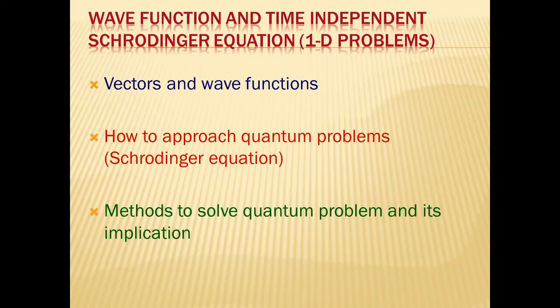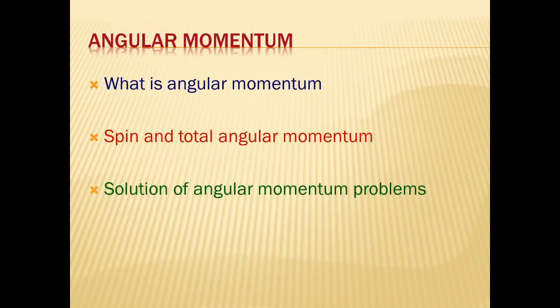The next unit is on Angular Momentum. We will study what angular momentum is, what spin is, and total angular momentum. We will introduce quantum mechanical angular momentum, how angular momentum vectors are represented in matrix form, and how to manipulate those matrices to solve problems.